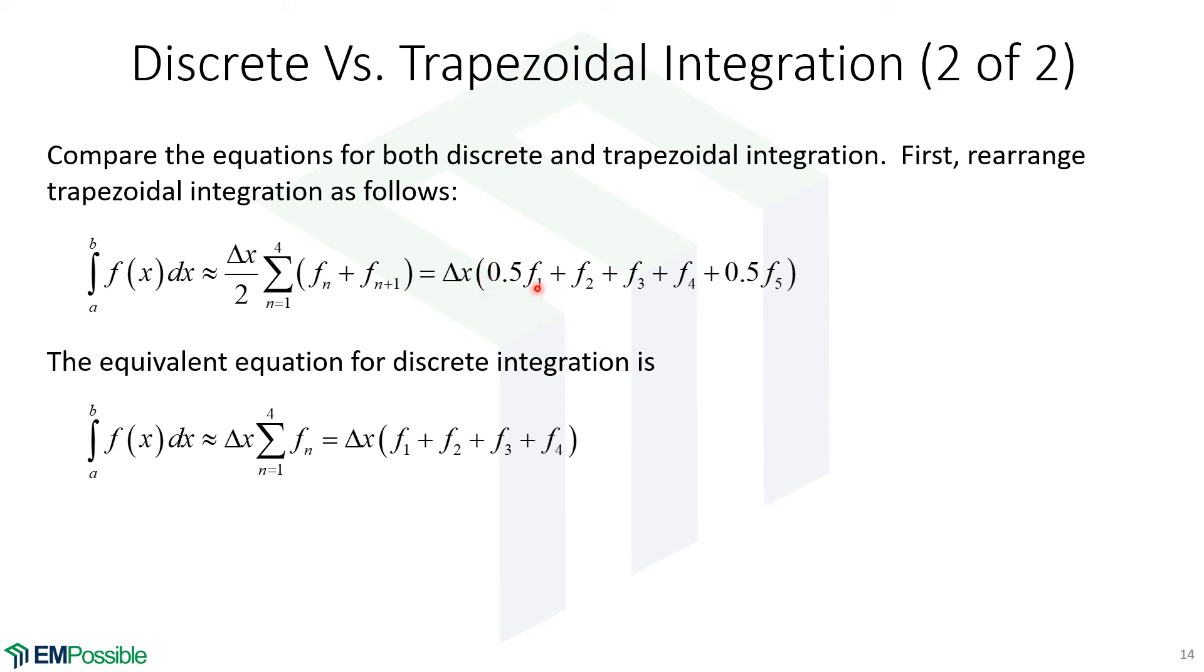We have essentially half of F1 and we have a half of an F5. So mentally, since we have an even spacing, let's lump these together and think of that as just a single F1. We have an F1 plus F2 plus F3 plus F4. That's exactly what we have for discrete integration. So I would argue that discrete integration with just one extra point is the exact same thing as trapezoidal integration. So why even introduce the confusion of trapezoidal integration if they are the exact same thing?